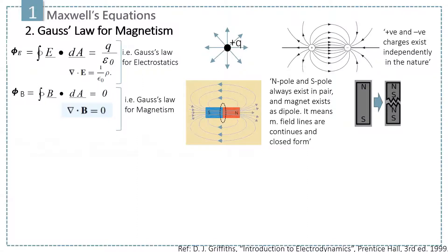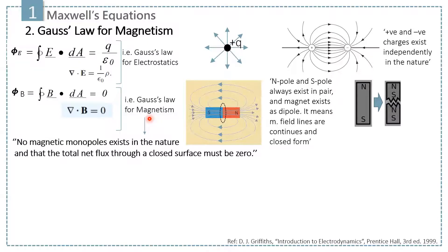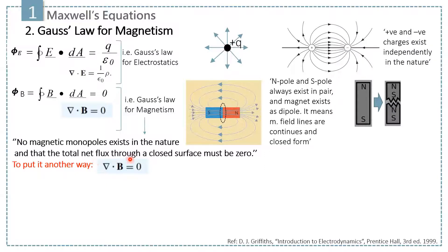Based on these explanations, we can now define Gauss's law for magnetism. First, no magnetic monopoles exist in nature. Second, the total net flux through any closed surface must be zero. Another way to express Gauss's law for magnetism is: divergence of B equals zero.